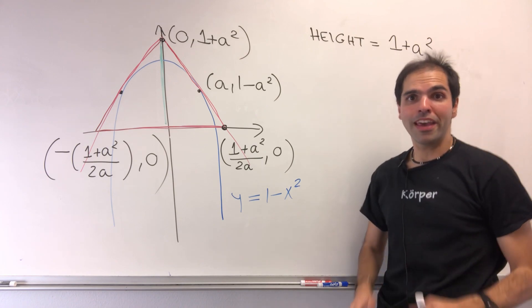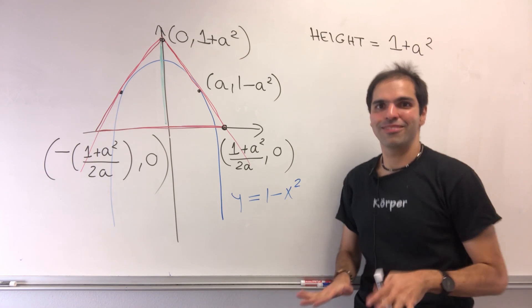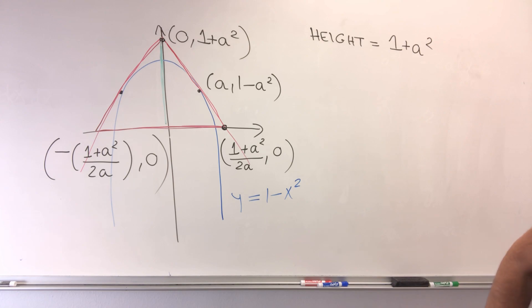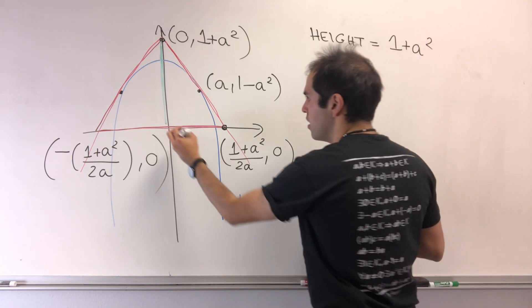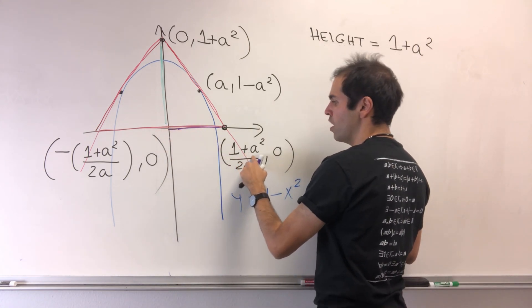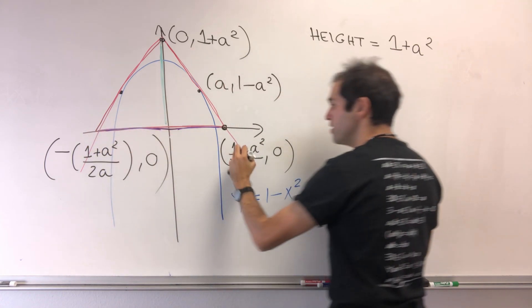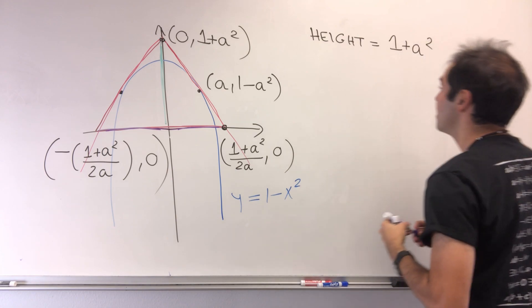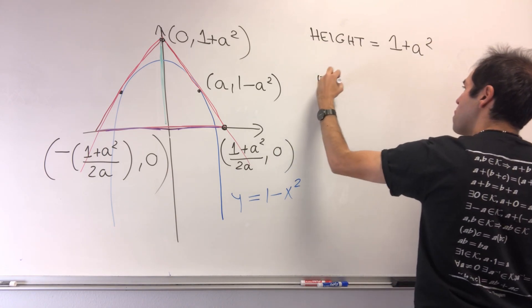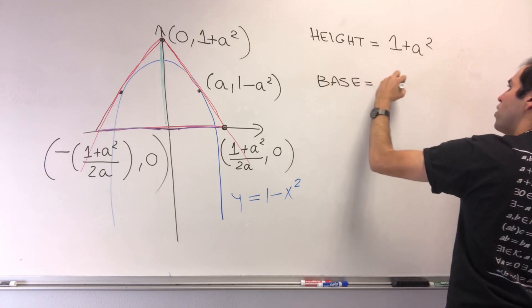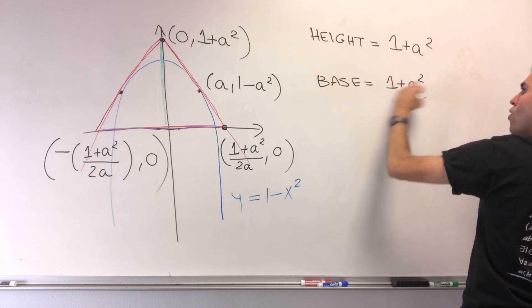And what is the base? All about the base. But the base, well, let's see. This distance is 1 plus a squared over 2a, which is the same thing as this distance. So it's just 2 times that. So base equals 1 plus a squared over a.